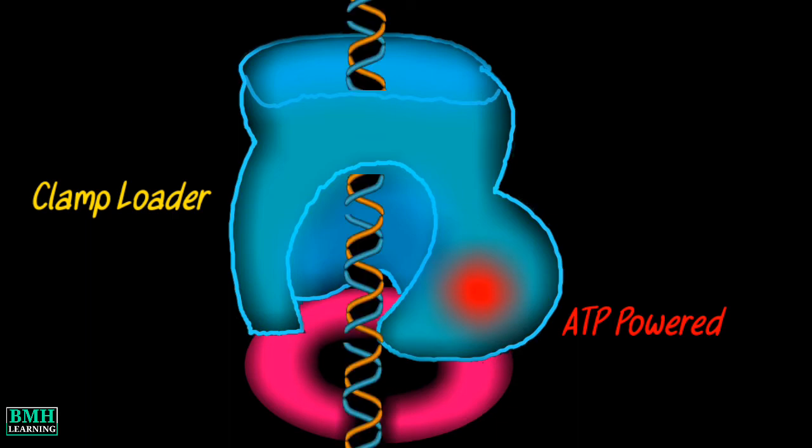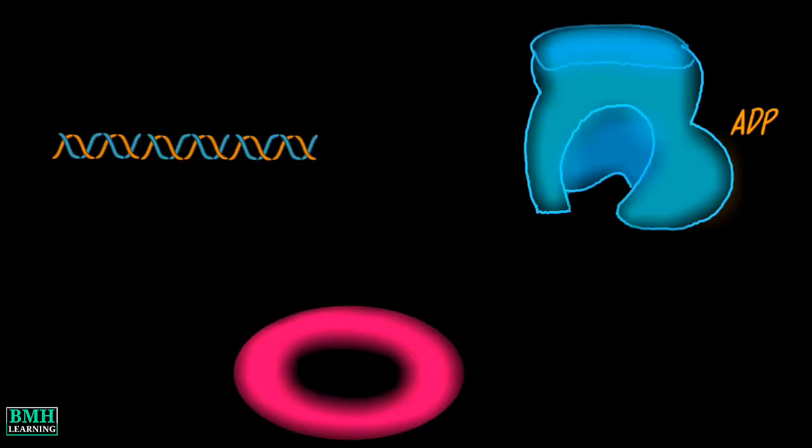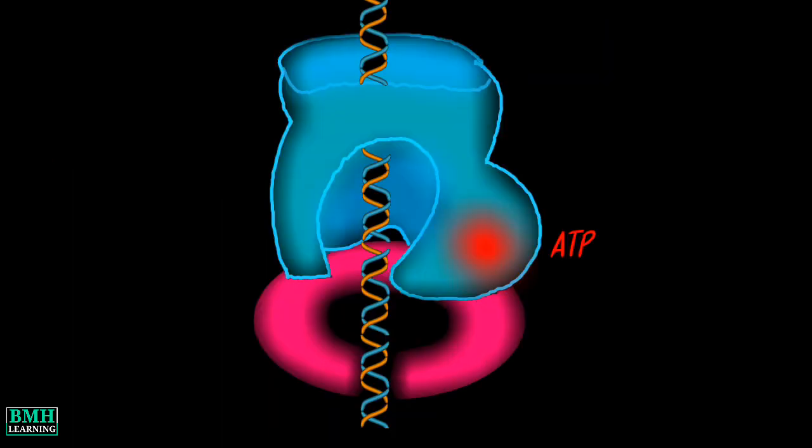Clamp loading mechanism: The clamp loader has low affinity for both clamp and primer template DNA in the absence of ATP. In the presence of ATP, the clamp loader binds and opens the ring-shaped DNA sliding clamp for its loading on the DNA.